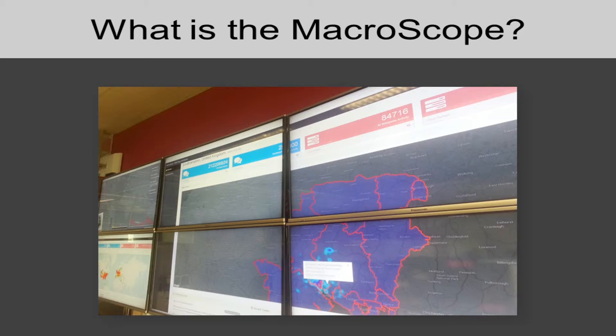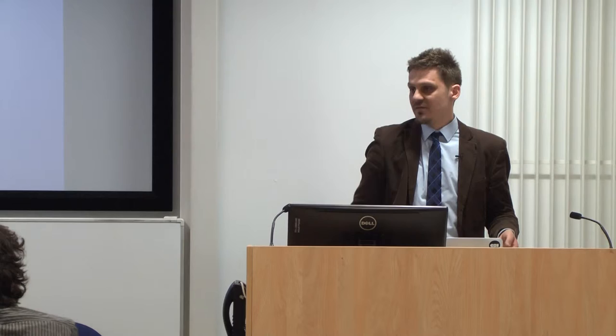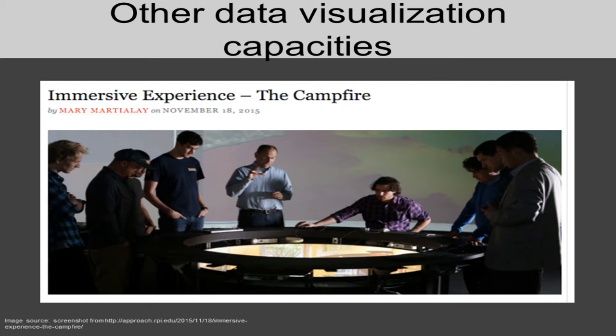The macroscope currently is data visualization brought out on six large screens — or 12, or only two, configurable. In ECS we currently have six screens positioned to bring visualizations from our analysis to the surface for the user. There are other similar capacities: the KPMG data observatory at the Data Science Institute in London, and Campfire from Rensselaer, where people sit around a circular visualization display and interact with it. These have nice interfaces to bring arbitrary visualizations to their surfaces.